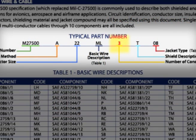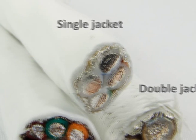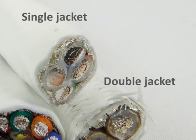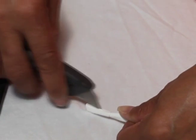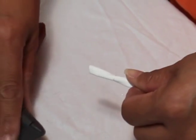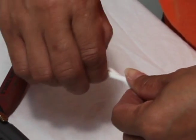Jacketing is specified by a two-digit code at the end of the M27500 part number. Cables may have no jacket, a single jacket, or a double jacket. If jacketing is applied, it must be easily removable from the rest of the cable.